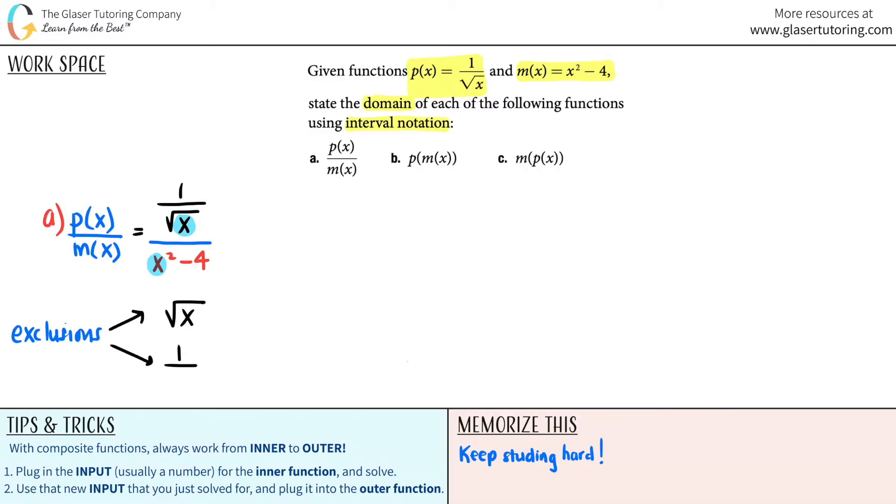Numbers that if you plug in for x's, the function would be undefined. It would not exist. There's usually two exclusions that you really have to worry about. Either square roots, so a number under a square root, there's exclusions or numbers that are not included when you do a square root. And then fractions, where you have your x value in the denominator.